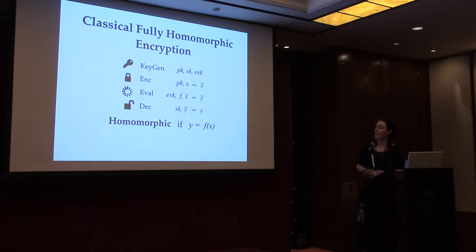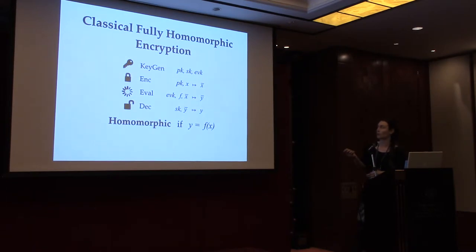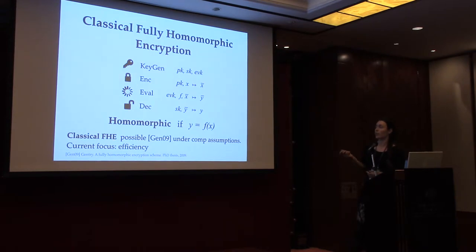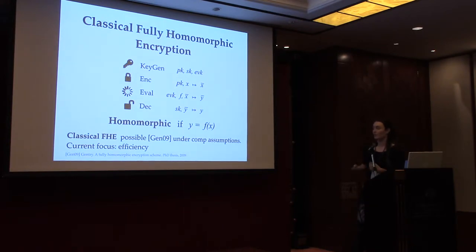Classical fully homomorphic encryption consists of four well-known algorithms: key generation, encryption (taking plaintext X and producing ciphertext X-bar), an evaluation function that takes an evaluation key, a function description F, and a ciphertext to produce a new ciphertext, and decryption — where the scheme is homomorphic if the decrypted output equals F applied to the input. It's possible to construct a fully homomorphic scheme for all functions under computational assumptions, first shown by Gentry in 2009, with many improvements in efficiency and assumptions since.